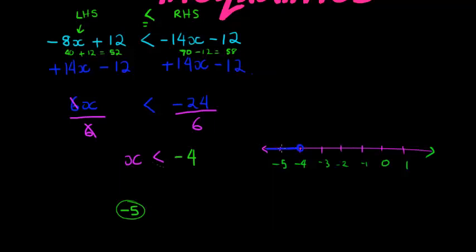Everything smaller than that looks like this. If I had to write this in interval notation, the smallest number it can take is negative infinity. It's heading towards negative infinity. The largest number it can take, or not really, but the largest number is negative 4, but it's not included. So it's not allowed to be negative 4.